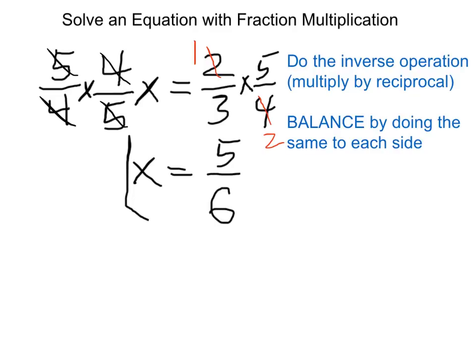So what I'm claiming is that 4 fifths times 5 sixths is equal to 2 thirds. Let's just do a quick check to make sure that works out.